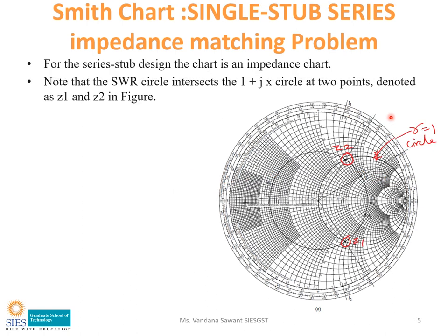First, locate the R equals 1 circle — that is the horizontal circle passing through the number 1 on the horizontal line. The VSWR circle will intersect the R equals 1 circle at two points. We always move in the clockwise direction from ZL. Moving clockwise on the VSWR circle from ZL, we reach the first intersection point — denote this as Z1.